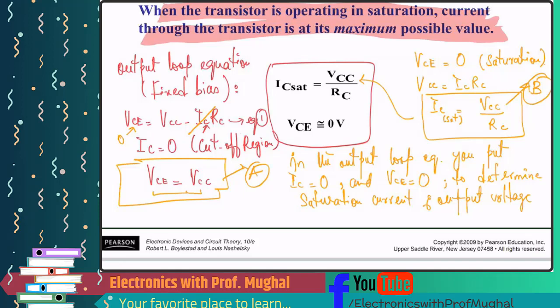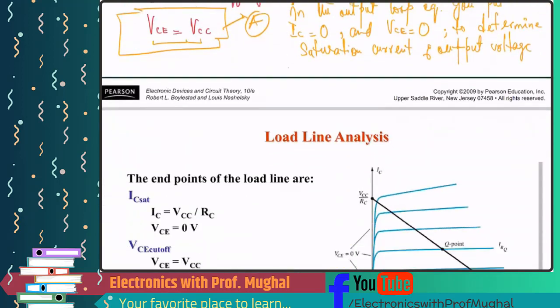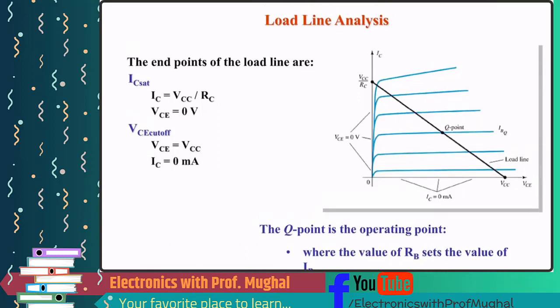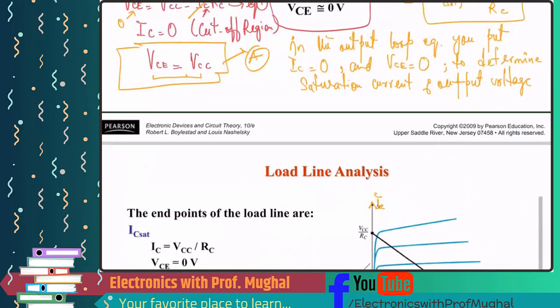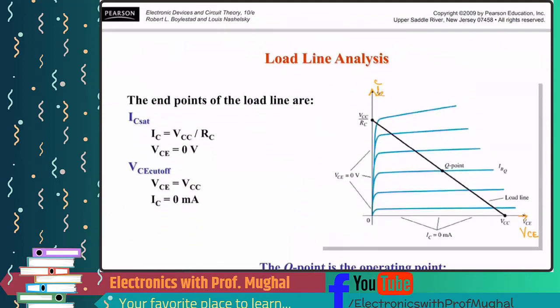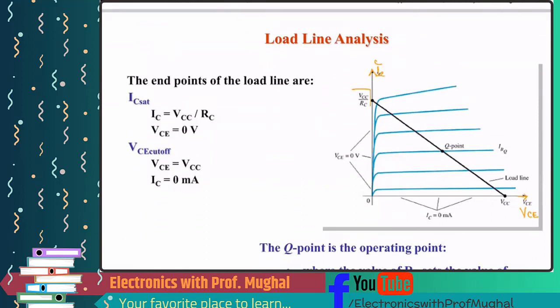We use these two equations to do the load line analysis. In a load line analysis we can analyze our circuit and change the operating region. On the y-axis I have the output parameter IC, which is the collector current, and on the x-axis I have the output voltage VCE. From the previous slide, VCE equals VCC and IC saturation equals VCC over RC — that's how I got these two equations.